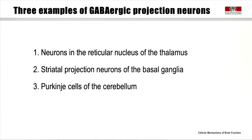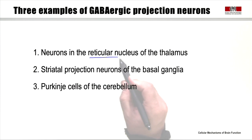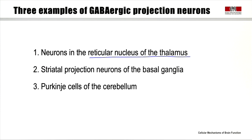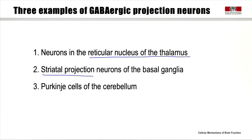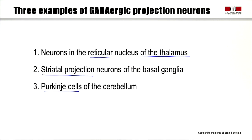We're going to focus on three examples of GABAergic projection neurons present in the mammalian brain. We'll discuss the neurons of the reticular nucleus of the thalamus, which provide an interesting feedback inhibition to the main thalamus and are presumably involved in filtering sensory signals getting to the cortex. We'll also discuss striatal projection neurons, part of the basal ganglia, thought to be involved in goal-directed motor control. And finally, we'll discuss the GABAergic Purkinje cells, the sole output of the cerebellum, and how they're involved in sensory motor tuning.